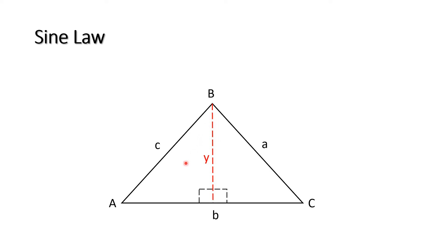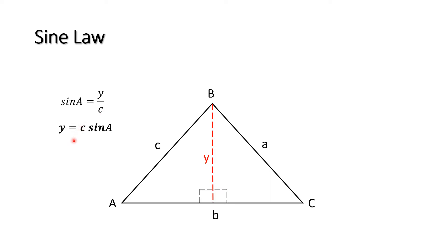Now let us first discuss the right triangle on the left side. Since this is sine law, we're going to use the sine function, which involves the opposite side and the hypotenuse. Considering angle A, sine A will be equal to the opposite side Y over the hypotenuse, which is side C. So sine A equals Y over C. Simplifying for Y, it becomes Y equals C times sine of angle A.